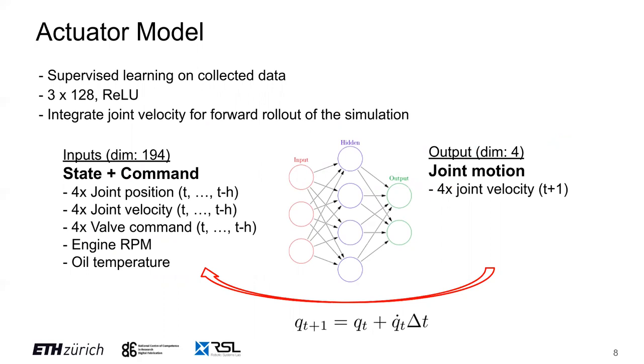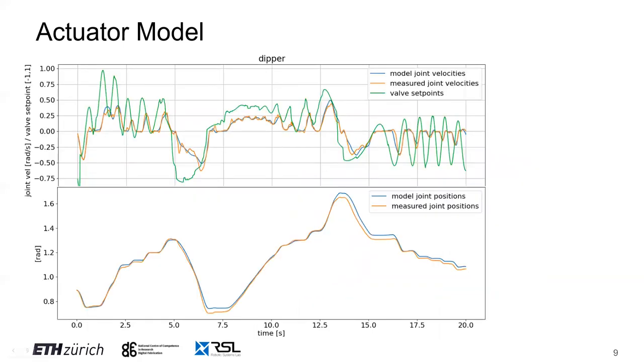Here are more insights about the actuator model. We use a simple three-layer neural network with ReLU activation. The input consists of the command and machine state, including history thereof to capture input delays. The input vector size is 194. The output consists of the velocity of the four joints at time step t+1. We train for about six hours on an RTX 2080 GPU. To use the actuator model in simulation, we roll it forward based on its own outputs, using forward integration of the predicted joint velocities to obtain joint positions.